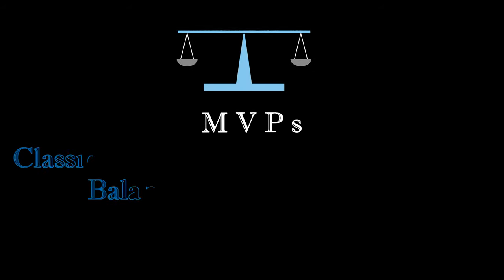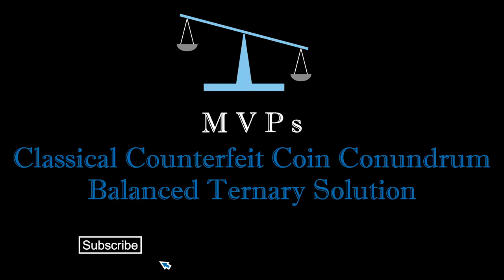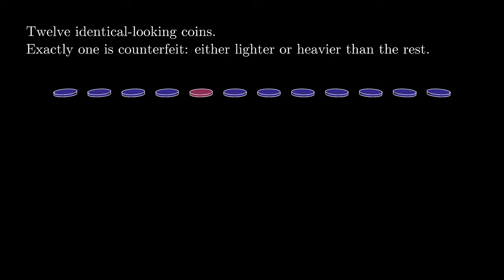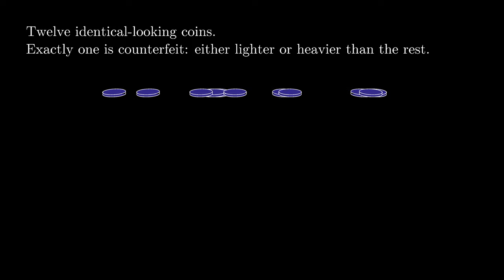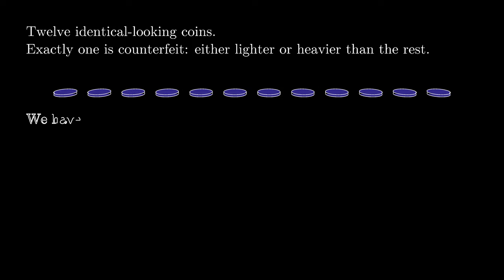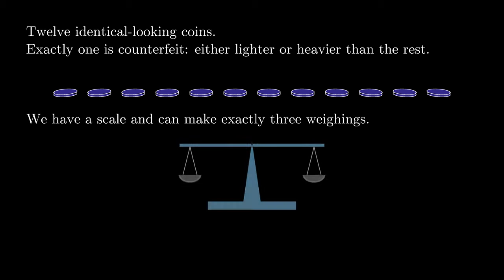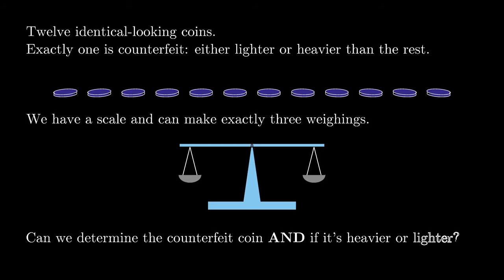Let's investigate one of my favorite recreational mathematical gems, and a non-standard solution that you don't often encounter. The classic puzzle goes like this: we have 12 identical looking coins, exactly one of which is counterfeit. That counterfeit coin is either heavier or lighter than the rest, but we don't know which. All we have is a balance scale that can make exactly three weighings. Can we determine the counterfeit coin and whether it's heavier or lighter than the rest?